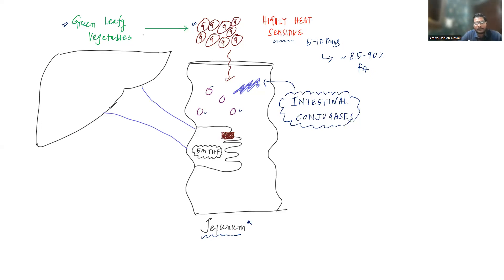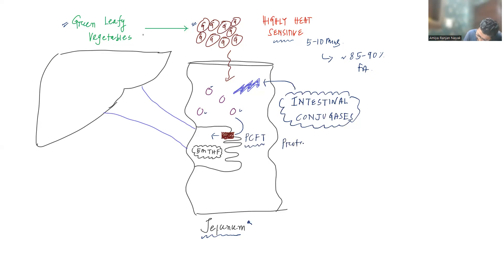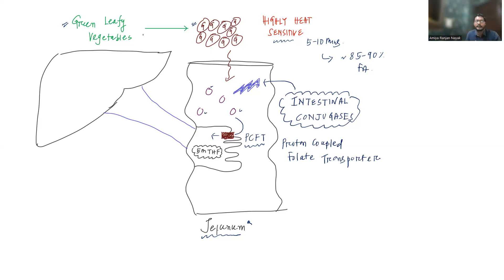The monoglutamate form can be absorbed by the jejunum epithelial cells. This absorption is carried out by a channel protein known as PCFT — proton-coupled folate transporter. With the help of protons, the monoglutamate forms of folic acid are absorbed into the jejunum epithelial cells.